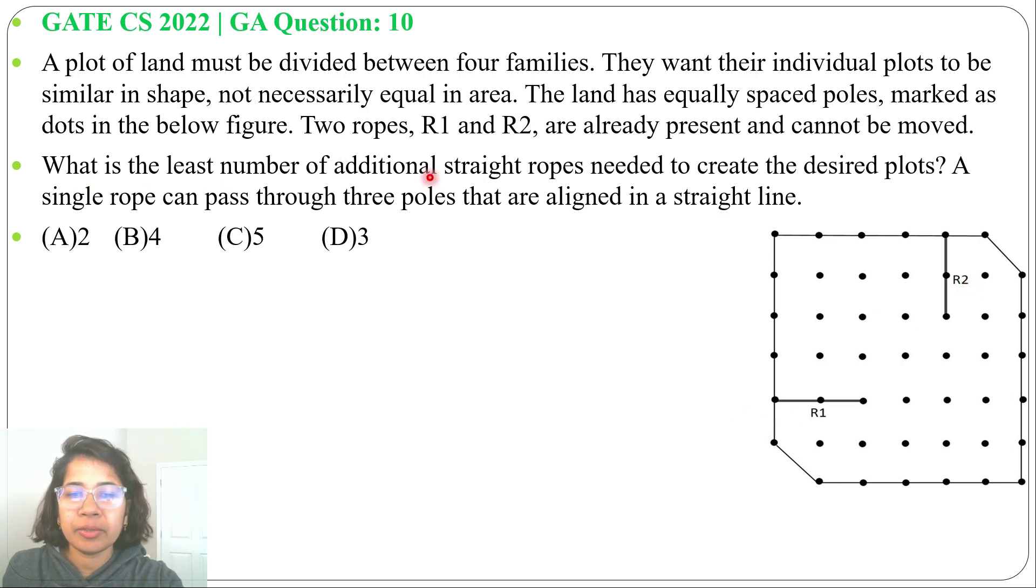What is the least number of additional straight ropes needed to create the desired plots? A single rope can pass through three poles that are aligned in a straight line.